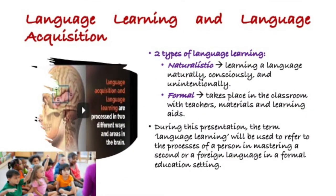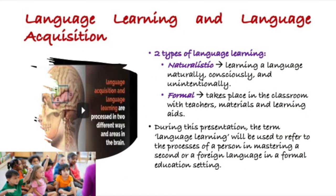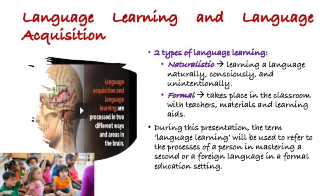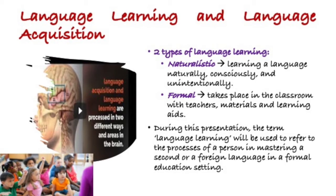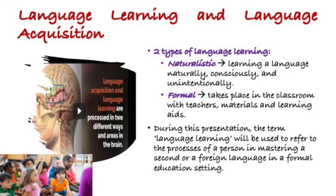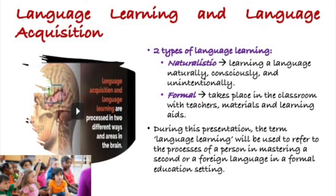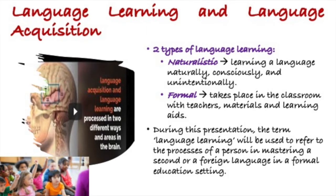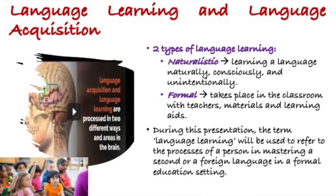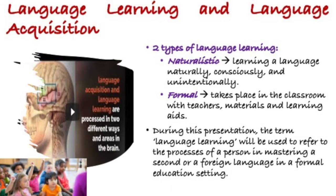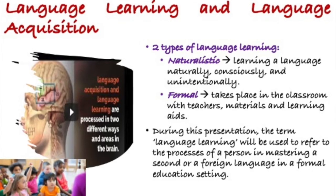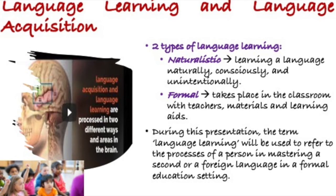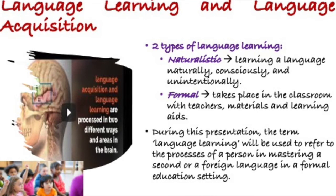Next is about language learning and language acquisition. There are two types of language learning: naturalistic and formal language learning. Naturalistic language learning is learning a language naturally, consciously, and unintentionally, and this usually occurs in bilingual or multilingual society. On the other hand, formal language learning takes place in the classroom, with teachers, materials, and learning aids. During this presentation, the term language learning will refer to the processes of a person in mastering a second or foreign language in a formal education setting.